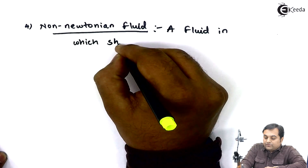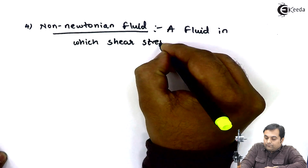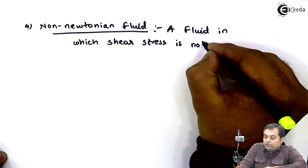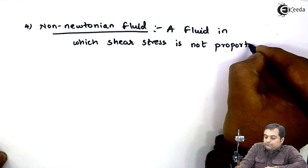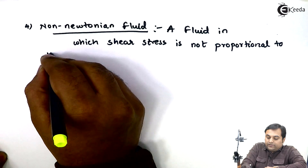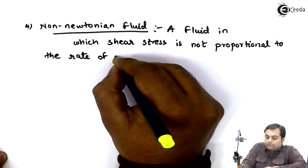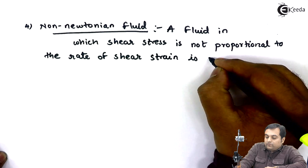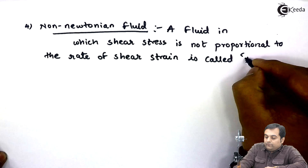Next, non-Newtonian fluid. A fluid in which shear stress is not proportional to the rate of shear strain is called a non-Newtonian fluid.